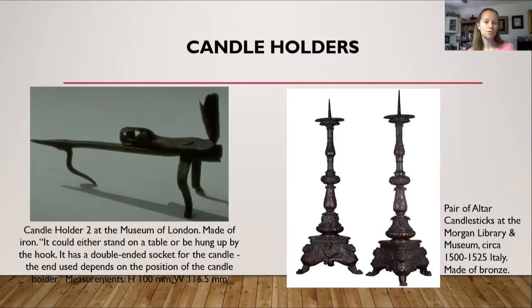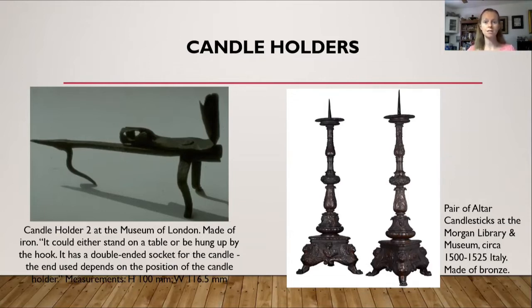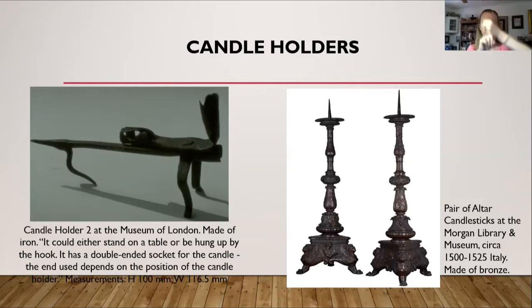Most candle holders found in museums are from churches, such as the pair of altar candlesticks on the far right. These are at the Morgan Library and Museum, from about 1500 to 1525, made in Italy of bronze. One thing you'll notice with altar candlestick holders is that instead of having a cup for the candle to sit in, there is just a base with a point sticking out, where the candle would be stabbed onto the point on top.